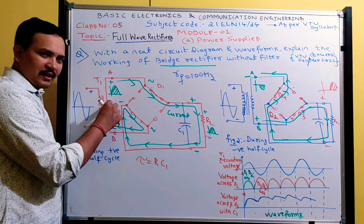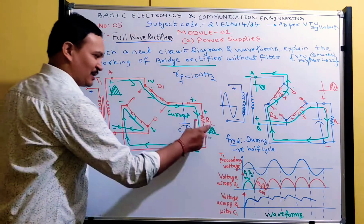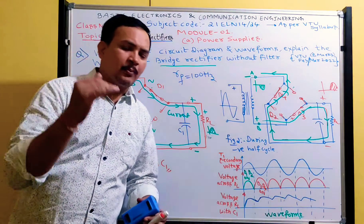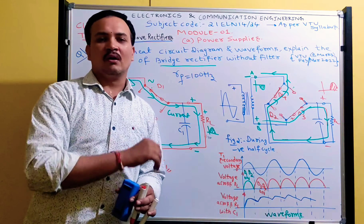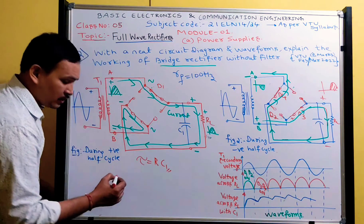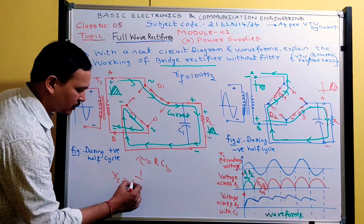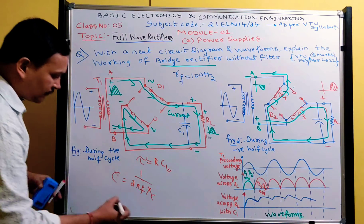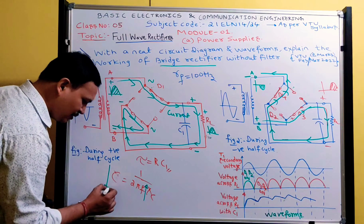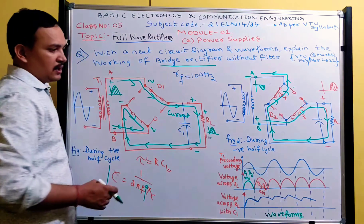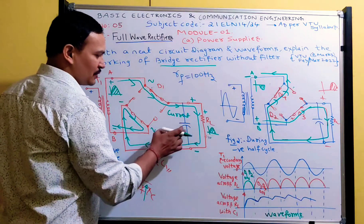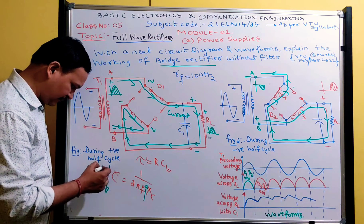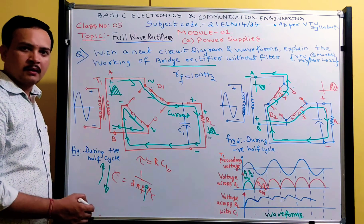If the ripple frequency is higher, we need a smaller value of smoothing capacitance. The capacitive reactance is Xc = 1 / (2πFC), so C = 1 / (2πF × Xc). As frequency increases, the required capacitance decreases. Conversely, if you use a higher capacitance value, the ripple decreases. So higher ripple frequency means less capacitance is needed to achieve the same smoothing effect.